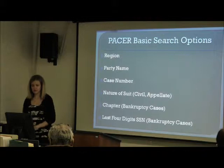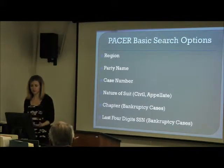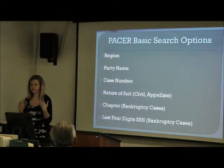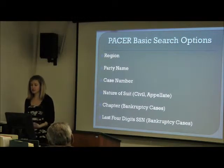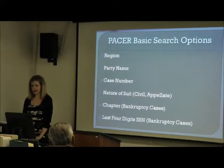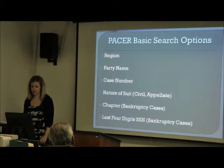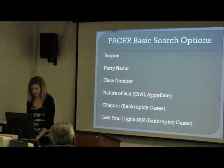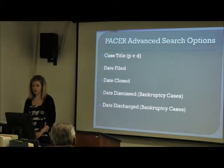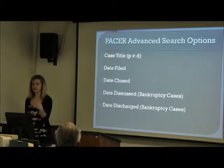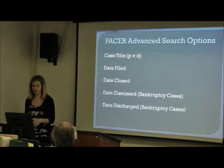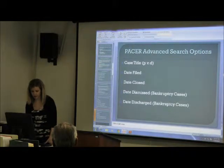As we'll see, we have standard fields for doing our searches. You can search by region — usually by court or by the whole Ninth Circuit — by party name, by case number. For civil cases and appellate cases, you can search by nature of suit; you can search by chapter for bankruptcy cases; and you can also search for bankruptcy cases if you have the last four digits of the debtor's social security number. Those are the basic search options, and we'll also look at advanced search options where you can search case titles — plaintiff versus defendant — date filed, date closed, date dismissed or discharged in bankruptcy cases.